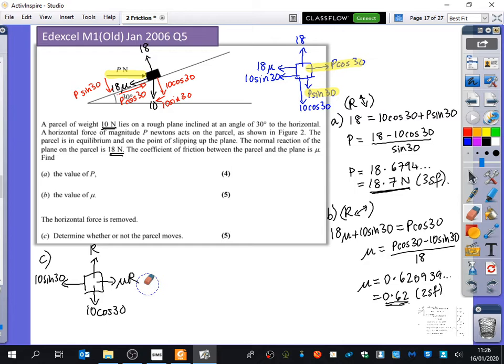If it was limiting equilibrium, or if it was moving, or if it was accelerating, okay? But it might not be, so I'm not going to call it μR. I'm actually just going to say it's the frictional force. It's the frictional force that we have there.